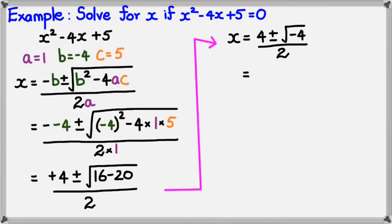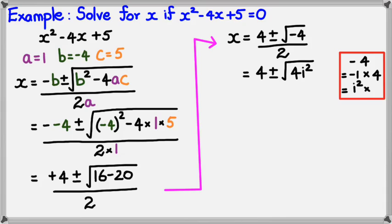And of course, simplifying this, I should get 4 plus or minus square root of 4i squared. Now for those of you that have forgotten how I got this 4i squared, we've got negative 4 equals negative 1 times 4, and of course I'm going to replace the negative 1 with i squared, so it's 4i squared. Going back to my equation, finish off the denominator, which is 2.